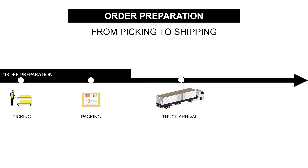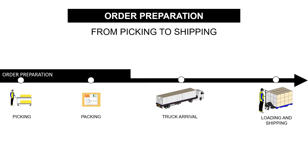You can also have issues with truck arrival — for example, if your transportation team cannot source enough trucks to ship the orders. And finally, during loading and shipping, you can have blockage due to invoicing issues. This is where root cause analysis can be complex, because several teams can be involved at that stage.